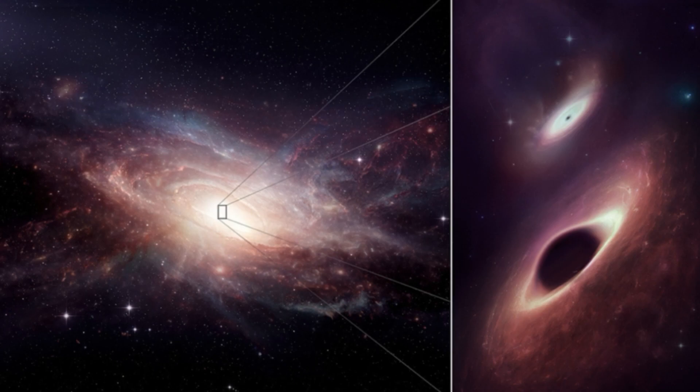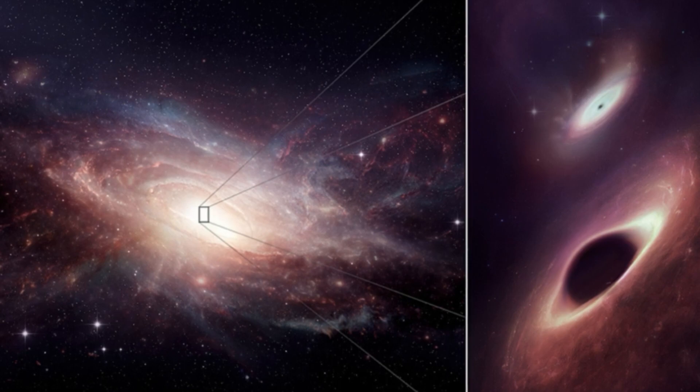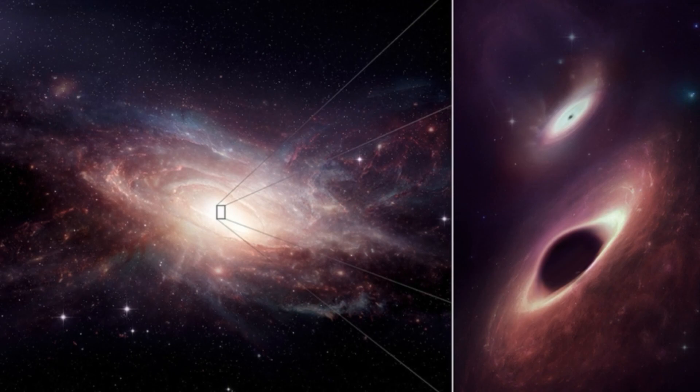Using the Atacama Large Millimeter-Submillimeter Array, ALMA, a telescope array capable of peering past clouds of dust and gas into the hearts of far-flung galaxies, researchers found that this galaxy is anchored at its center by not one, but two supermassive black holes.